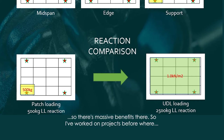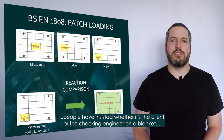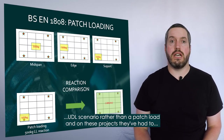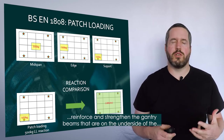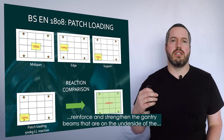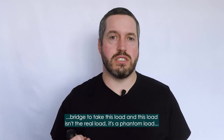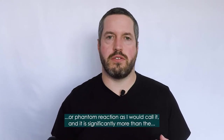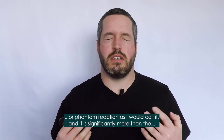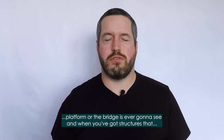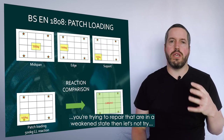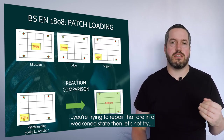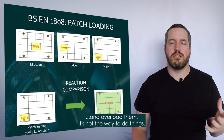I've worked on projects where people — whether the client or checking engineer — insisted on a blanket UDL scenario rather than a patch load. On these projects they had to reinforce and strengthen the gantry beams on the underside of the bridge to take this load. But this load isn't the real load — it's a phantom load, or phantom reaction as I would call it. It is significantly more than the platform or bridge is ever going to see. When you have structures you're trying to repair that are in a weakened state, you shouldn't be trying to overload them. It's not the way to do things.